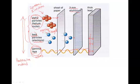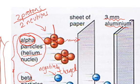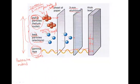Going back to alpha particles — because they contain two protons and no electrons, and protons are positively charged, alpha particles are positively charged. Beta particles are negatively charged because they are electrons. Gamma rays, however, have no charge.